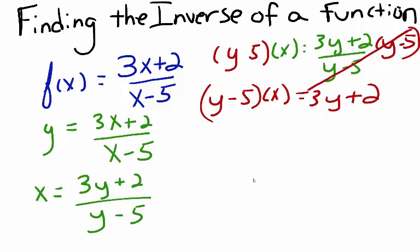I'll distribute x through y minus 5, so I have xy minus 5x equals 3y plus 2.